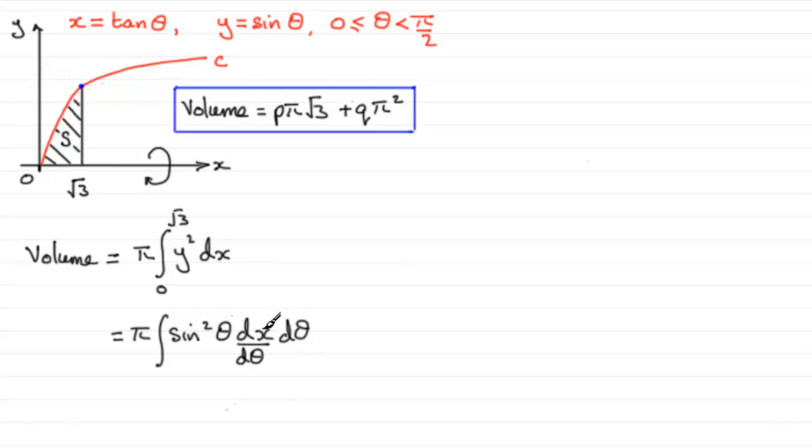So it means that I'm going to have to work out what dx by d theta is. So I can do that from our value up here. We know at the moment that x equals tan theta. So we can differentiate that and get dx by d theta. dx by d theta would be sec squared theta. So we can pop that in there as sec squared theta.